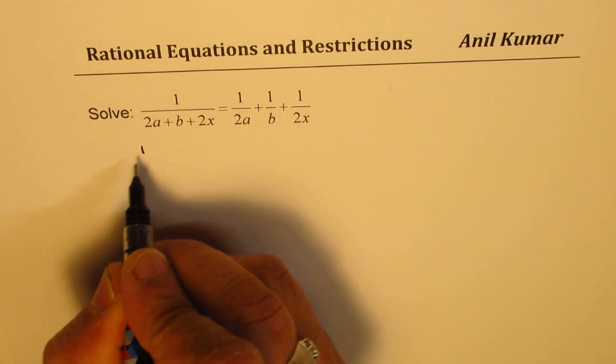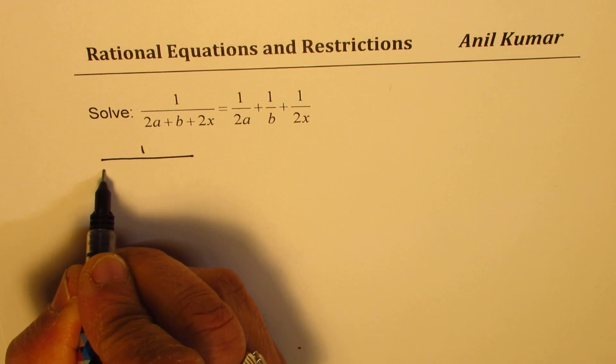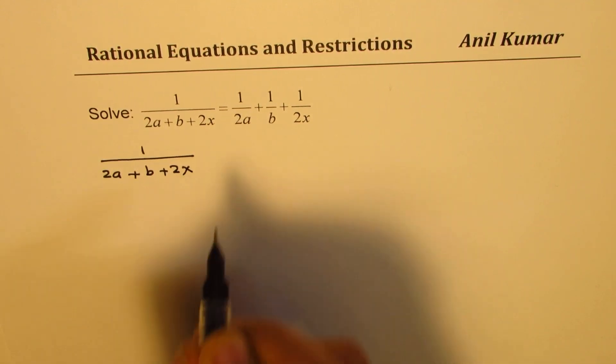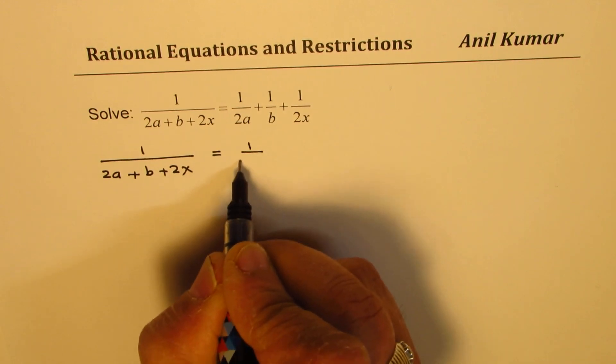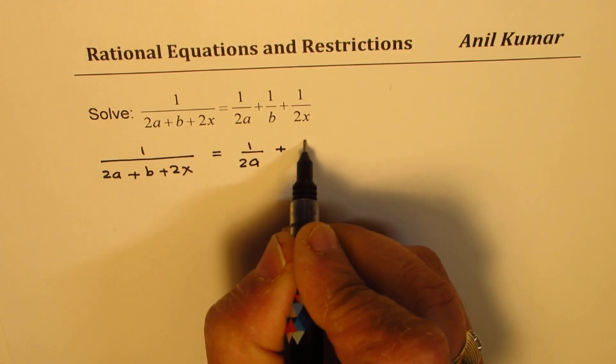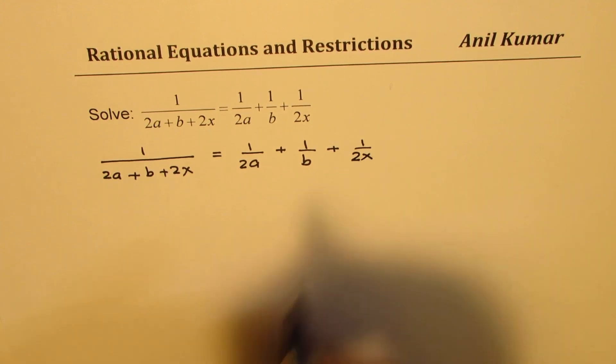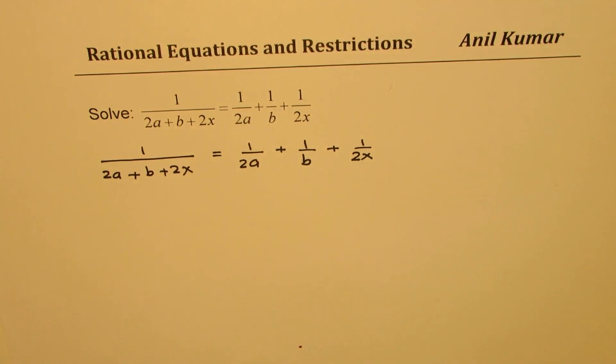We are given 1 over 2a plus b plus 2x equal to 1 over 2a plus 1 over b plus 1 over 2x. You can actually now pause the video and try to answer this question, and then look into my suggestions.